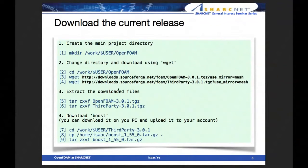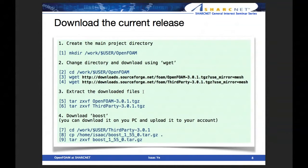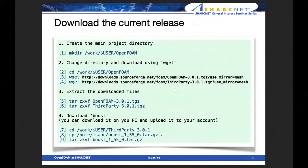You can download OpenFOAM on your PC and transfer the file to SharcNet using SFTP. Or you can download it directly on the login node using wget — just type wget followed by the download address. As far as I know, version 3.0.1 is the latest version. Download it, then extract the files since the downloaded file is in tar and gzip format — untar it using the appropriate command.